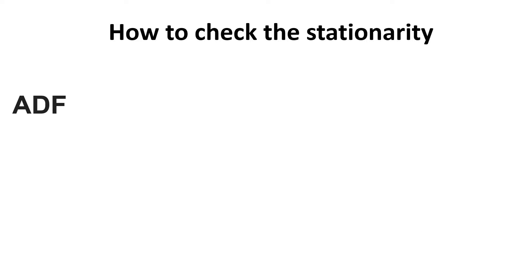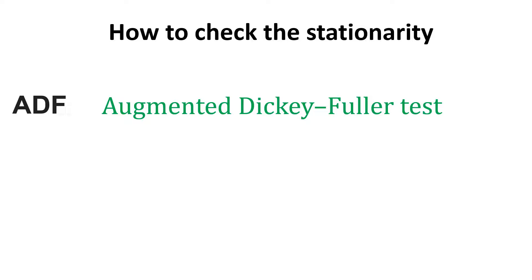The first method is the ADF test — sometimes also called ADCF — which stands for Augmented Dickey-Fuller test. There is a Wikipedia page for this; I'll provide the link in the description. In this test, we set up the null hypothesis that the data is not stationary, and then we perform this test which will either reject or accept the null hypothesis.